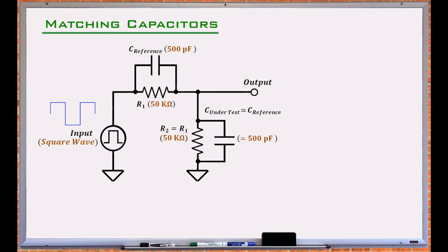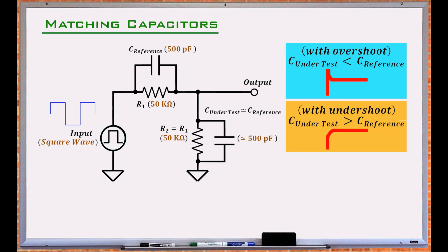In this circuit, the output experiences an overshoot if the capacitor under test has a lower value, and an undershoot if it has a higher value than that of the reference capacitor.